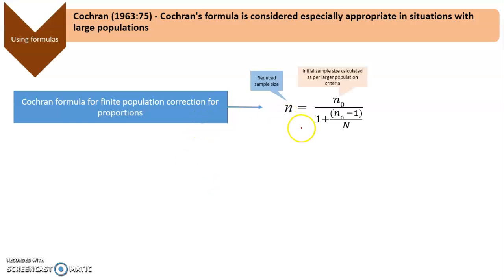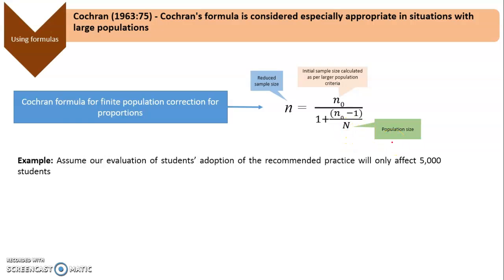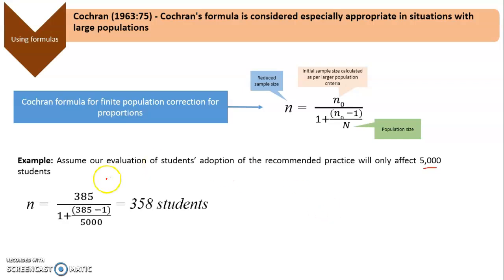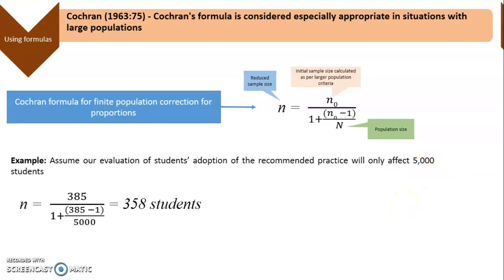Cochrane also provides a correction formula for finite populations: N = N₀ / (1 + N₀/N), where N is the reduced sample size, N₀ is the initially obtained sample size for an infinite population, and capital N is the population size. For example, if the students' adoption of the recommended practice affects only 5,000 students, substituting N₀ = 385 and N = 5,000 gives a reduced sample size of 358 students. If the population size is unknown, use 385; if known, use the reduced value of 358.